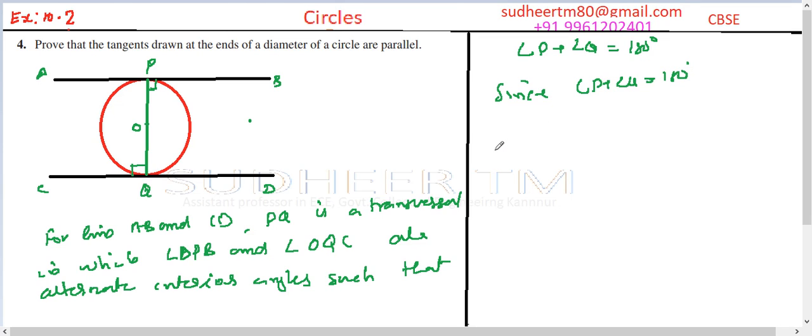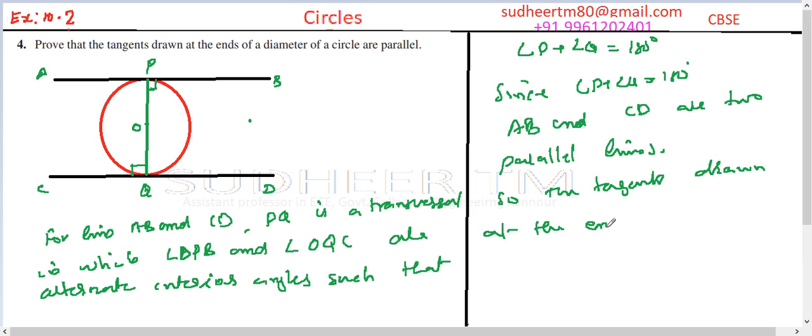Since angle P plus angle Q is equal to 180 degrees, AB and CD are two parallel lines. And so the tangents drawn at the ends of a diameter of a circle are parallel.